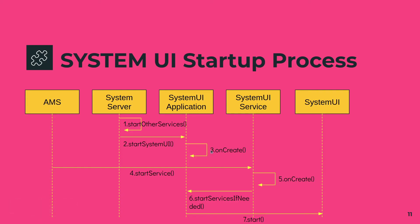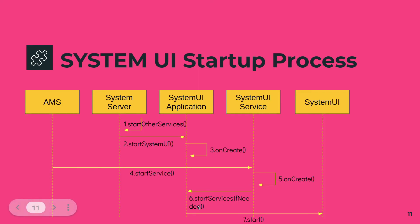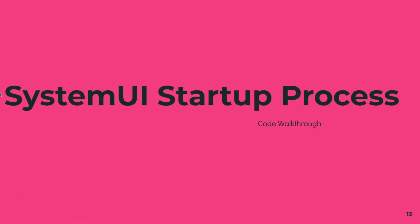After the onCreate of SystemUIApplication, the Activity Management Service receives a trigger and calls the startService function, which calls SystemUIService. SystemUIService has an onCreate function which gets executed, and this calls startService if needed from SystemUIApplication. Then SystemUIApplication calls the start method, which finally triggers System UI initialization. This is the overall sequence diagram of how that works.